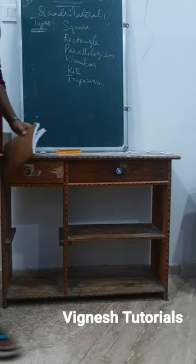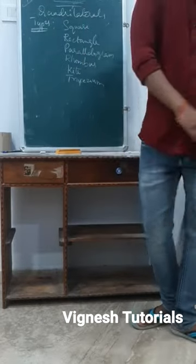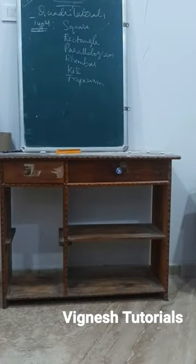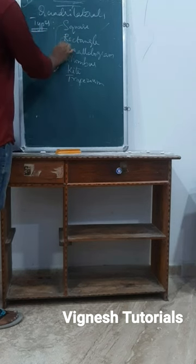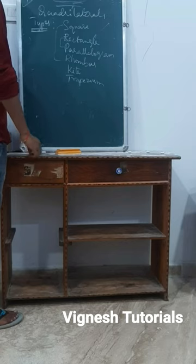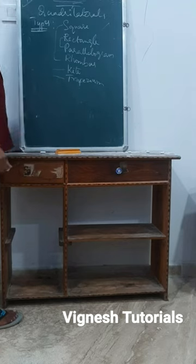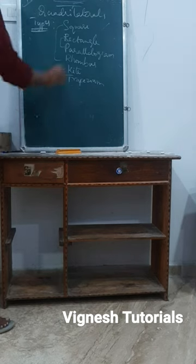Especially these are most important: there are a few similarities. Square and rhombus are similar, and rectangle and parallelogram are similar. Trapezium is different, and kite is also a little bit different. Okay, let's see each one in detail.